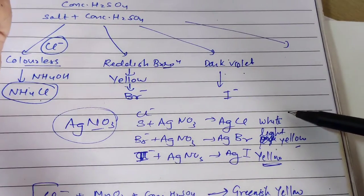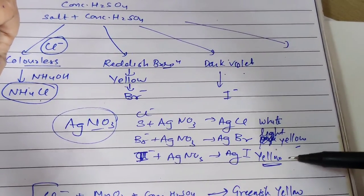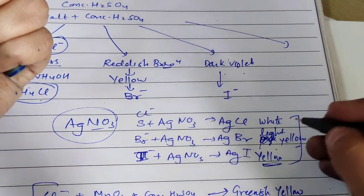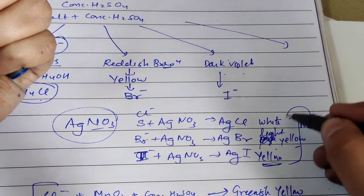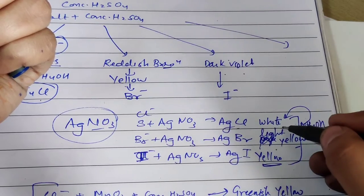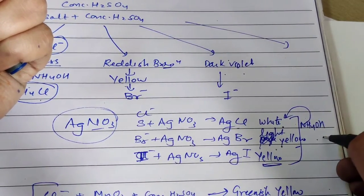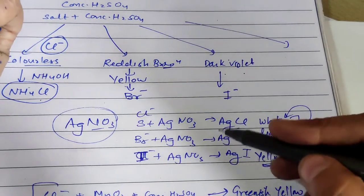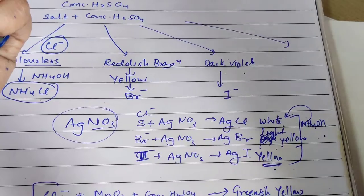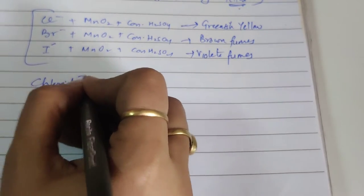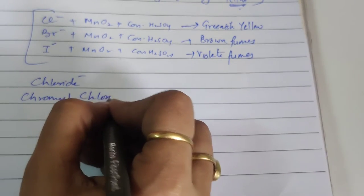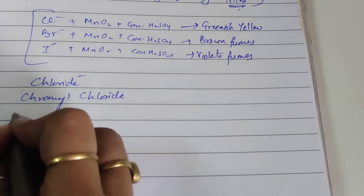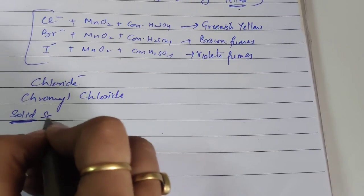Students sometimes cannot easily distinguish between white, light yellow, and complete yellow precipitates in the AgNO₃ test. So the next test is to add NH₄OH: if the precipitate is completely soluble, it is AgCl (chloride); if partially soluble, it is a bromide precipitate; if the precipitate remains insoluble, it is an iodide precipitate.